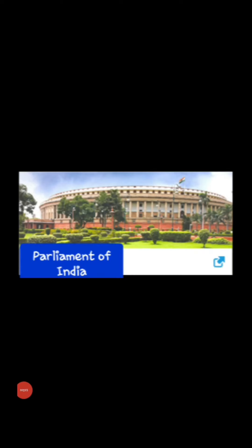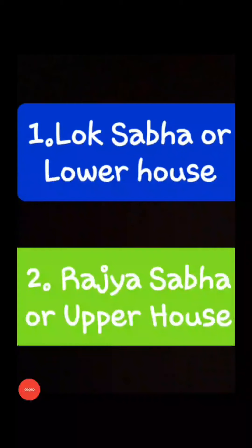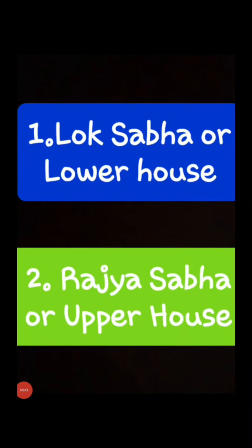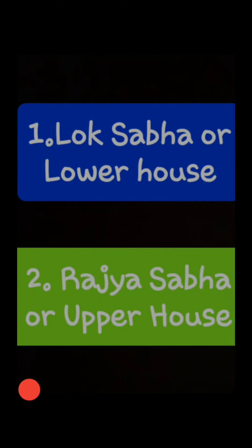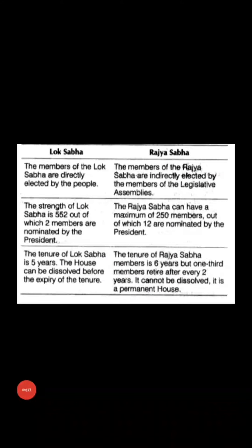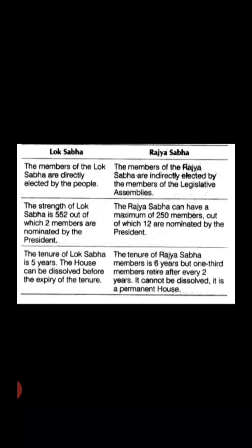The Parliament is the chief lawmaking body of the country. It consists of two houses. Number one: Lok Sabha, also known as the lower house of the Parliament. Number two: Rajya Sabha, also known as the upper house of the Parliament. The members of the Lok Sabha are directly elected by the people and are called Members of Parliament, or MPs. The total strength of Lok Sabha is 552, out of which two members are nominated by the President.